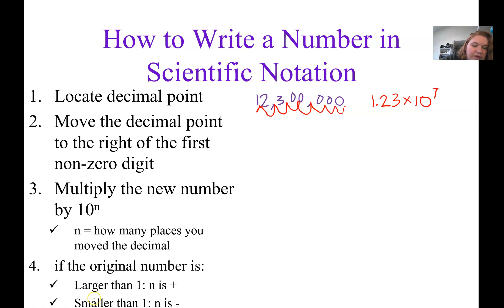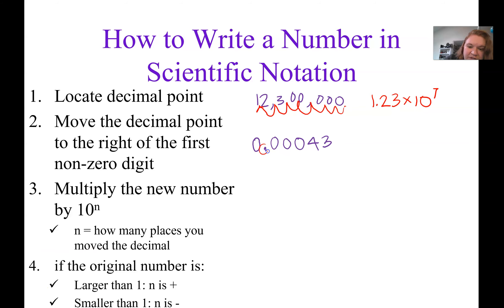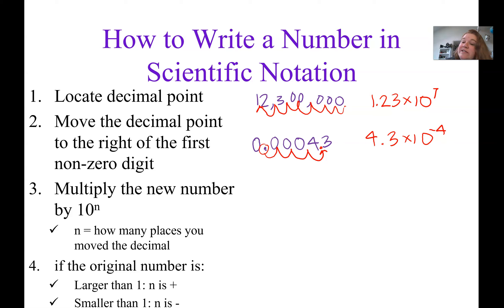Now with a smaller number, 0.00043, the decimal place is shown. We move it to the right of the 4, which is the first non-zero digit, counting 1, 2, 3, 4 places. We rewrite this as 4.3 times 10 to the negative 4, because we started with a number that was less than 1.